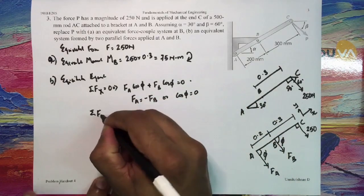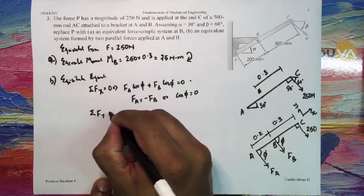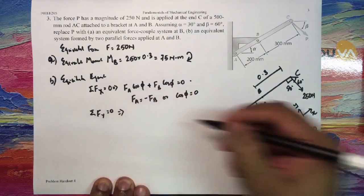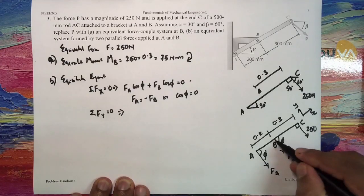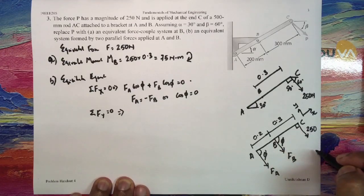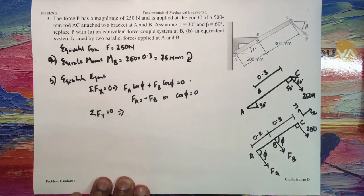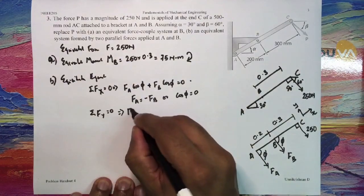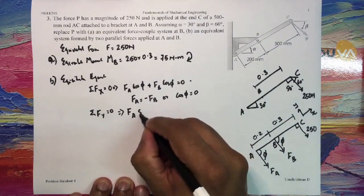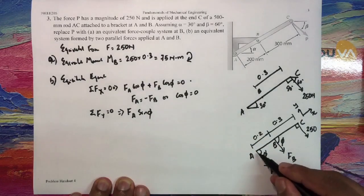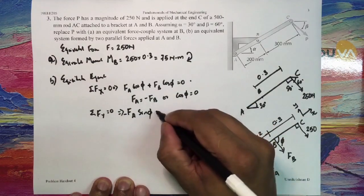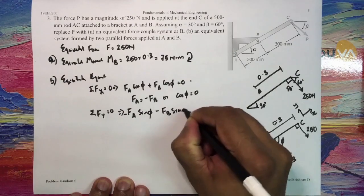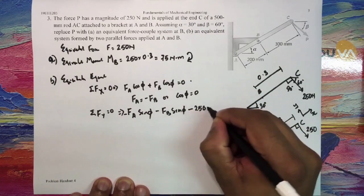Now we will revisit this based on the other set of equilibrium equation. That is sigma FY equal to 0, which implies I have the force FA acting like this, FB acting like this, and 250 Newtons also acting in the negative direction. I have assumed it that way. So what I would get: FA sin phi, and that sine component will definitely be in the negative direction, minus FA sin phi minus FB sin phi minus 250 is equal to 0.